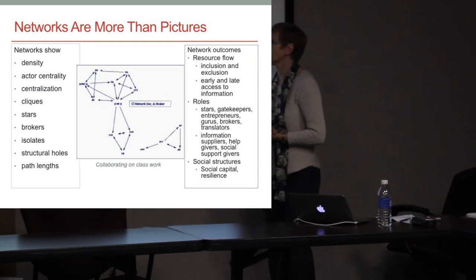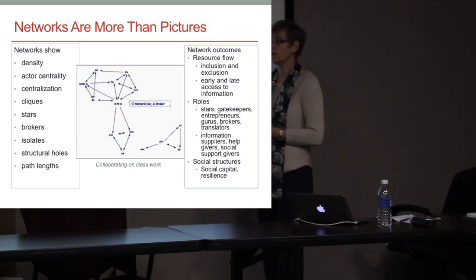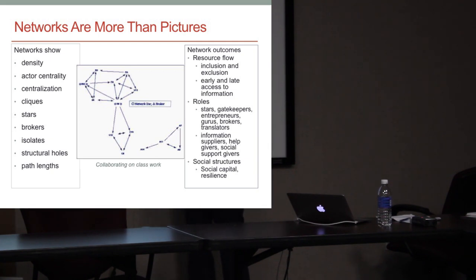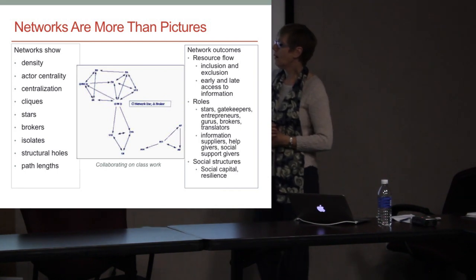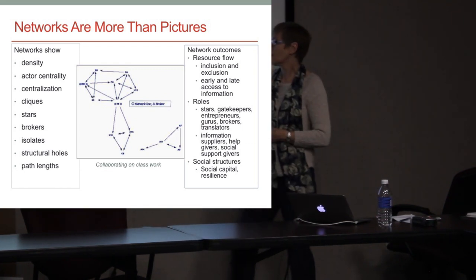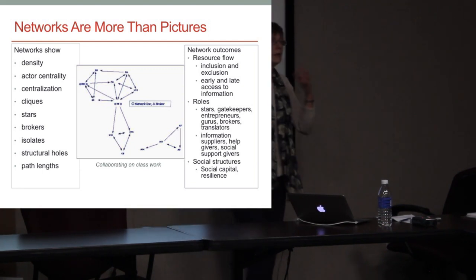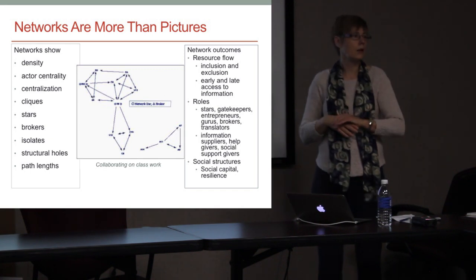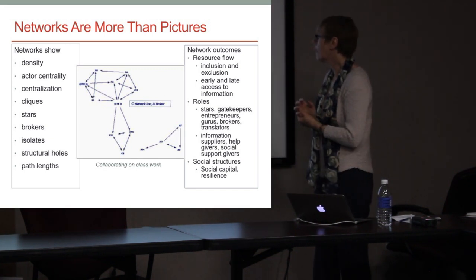Network concepts include density — how many connections there are — centrality, and the centralization of the network itself around a particular individual. This person is the most central, they're the network star, they're also the broker because they connect two groups, and they're also a 'cut point' — if you take them out, the network falls apart. That's a position I'm always very interested in: what happens when you take one piece out?